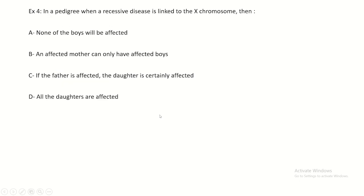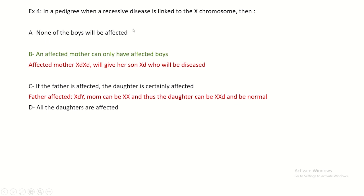In a pedigree where a recessive disease is X-linked: statement A - none of the boys would be affected - is false. Statement B - an affected mother can only have affected boys - is true, because she is X-d X-d and gives X-d to all sons. Statement C - if the father is affected, the daughter is certainly affected - is false, because the daughter can receive a normal X from her mother, masking the recessive allele.